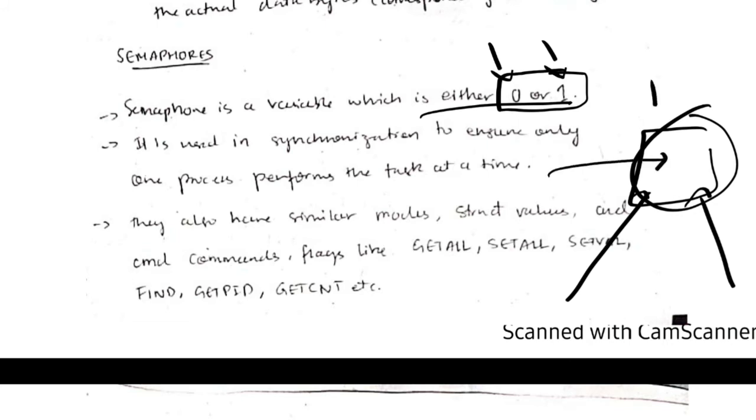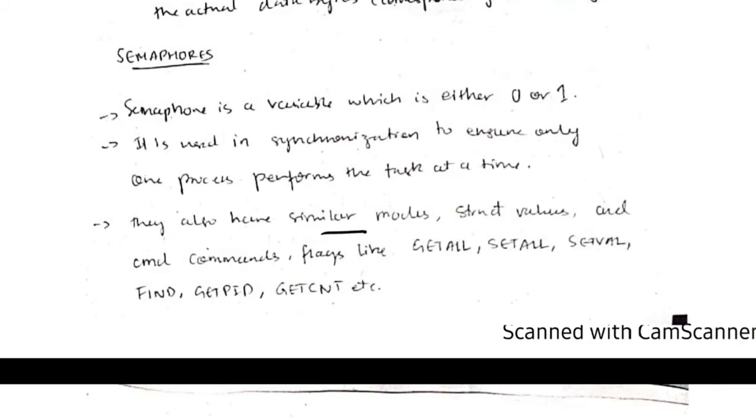When a user is using the file, the semaphore value will become one and other users cannot be using the file. They can use only when the semaphore value is zero. When this user exits the file, the semaphore value will become zero and other users will be able to access the file. They also have similar methods and modes and struct values like getall, setall, setvalue.